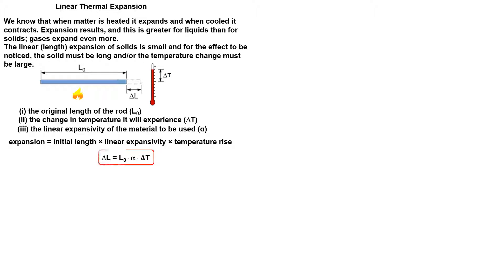The linear expansivity of a material is found by experiment. Linear expansivity is the increase of 1 meter of material for a 1 degree Celsius rise in temperature. For example, for steel it is 0.000012 per degree Celsius, meaning that 1 meter will become 1.000012 meters for a temperature rise of 1 degree Celsius.